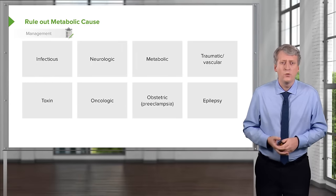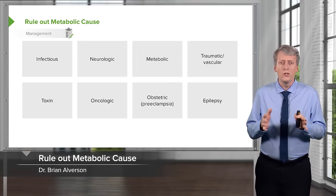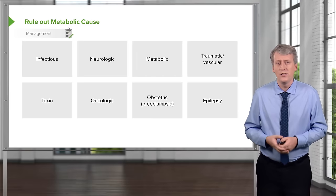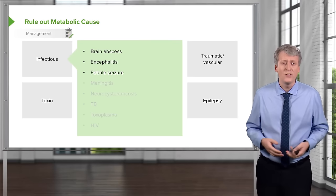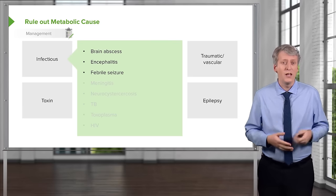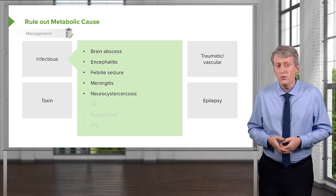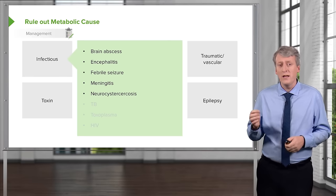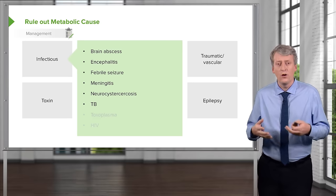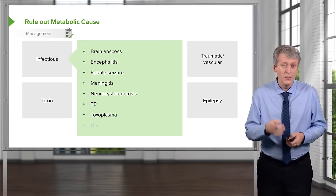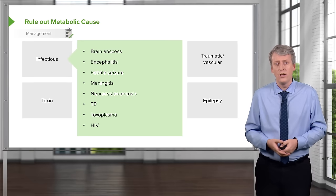If you detect a seizure in a child, especially a tonic-clonic seizure, we have to be concerned that there may be other causes. Infectious causes include brain abscesses, encephalitis, febrile seizure, meningitis, neurocysticercosis from eating raw beef, tuberculosis causing calcified brain lesions, toxoplasma, and HIV encephalitis.